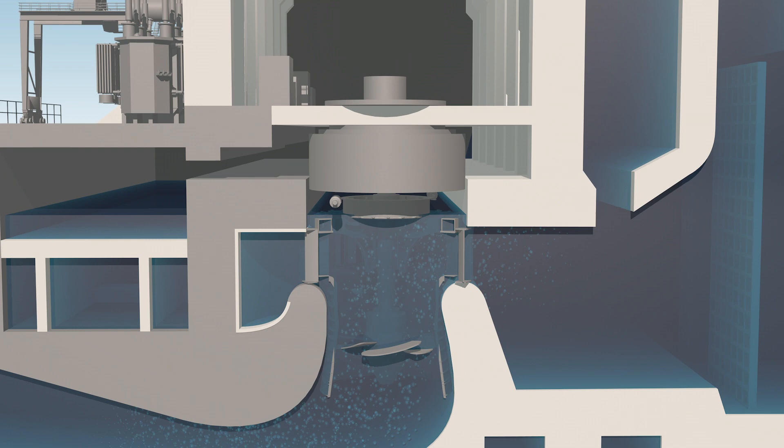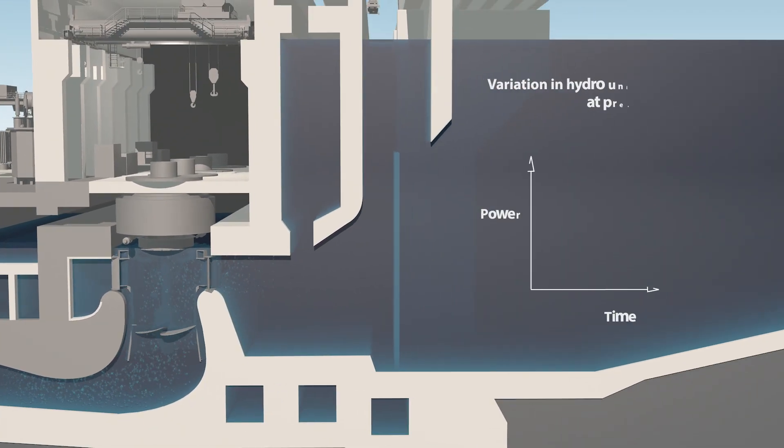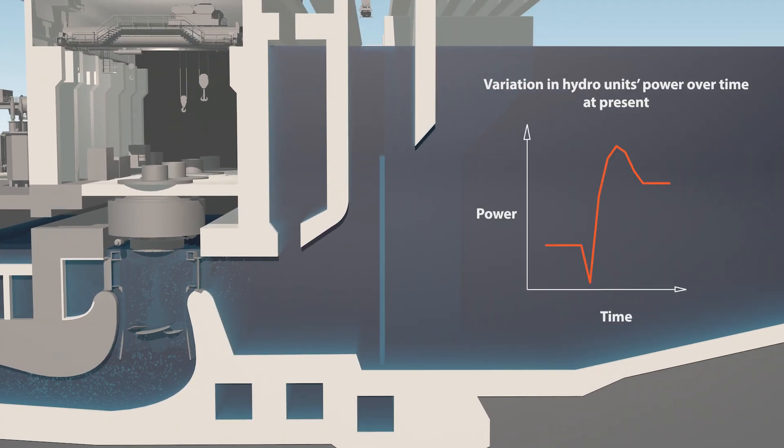But abruptly increasing or decreasing hydro-unit power can cause short-term asymmetries in power output and hurt FCR quality.